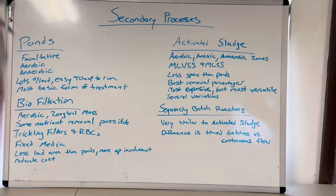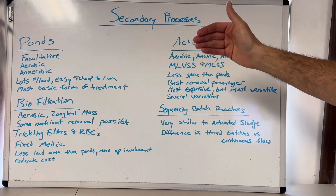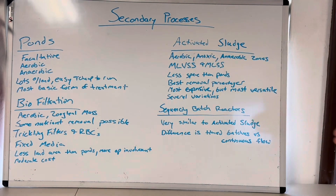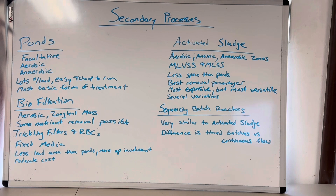First, you have ponds. They are classified as either facultative, aerobic, or anaerobic. Facultative are the most common because they mimic nature the most — you rely on the wind to aerate the top, or sunlight and algae. Then you'll have an anaerobic layer on the bottom. These are stratified ponds, typically nine to twelve feet deep.